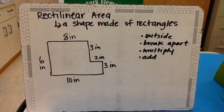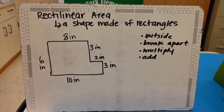Well here we have a rectilinear shape, and all a rectilinear shape is is a shape made of rectangles joined together. So if we can find the area of regular rectangles, we can find the area of a rectilinear shape. We just have to do a few more steps.